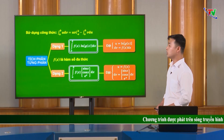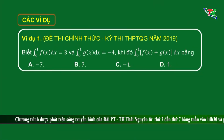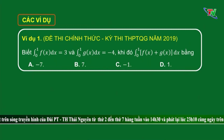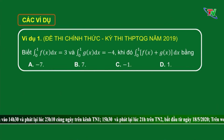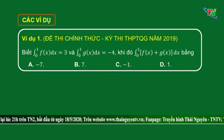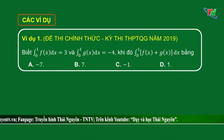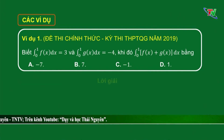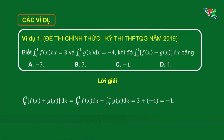Trên đây là một số phần lý thuyết cơ bản của tích phân. Sau đây sẽ là một số ví dụ minh họa. Ví dụ 1, đây là một câu trong đề thi chính thức kỳ thi Trung học phổ thông quốc gia năm 2019. Biết tích phân từ 0 đến 1 của f(x) bằng 3, tích phân từ 0 đến 1 của g(x) bằng âm 4. Khi đó, tích phân từ 0 đến 1 của [f(x) + g(x)] bằng phương án A âm 7, phương án B 7, phương án C âm 1 và phương án D 1. Áp dụng tính chất tích phân của tổng 2 hàm số, ta chuyển thành tổng của 2 tích phân: tích phân từ 0 đến 1 của f(x) cộng tích phân từ 0 đến 1 của g(x). Thay giả thiết bài toán ta được 3 cộng âm 4 bằng âm 1. Đó là phương án C.